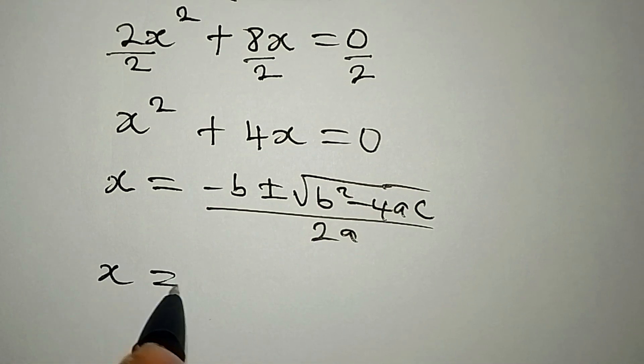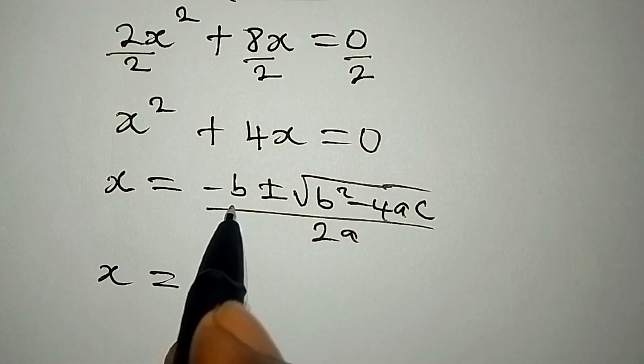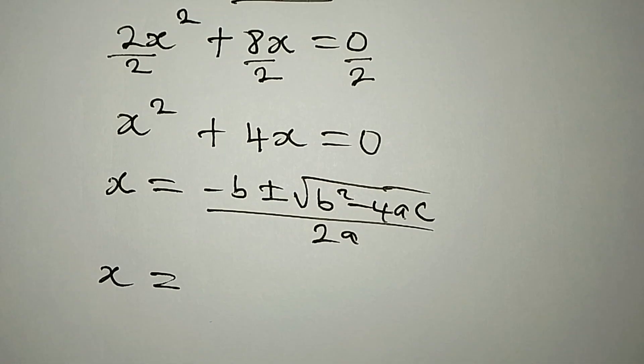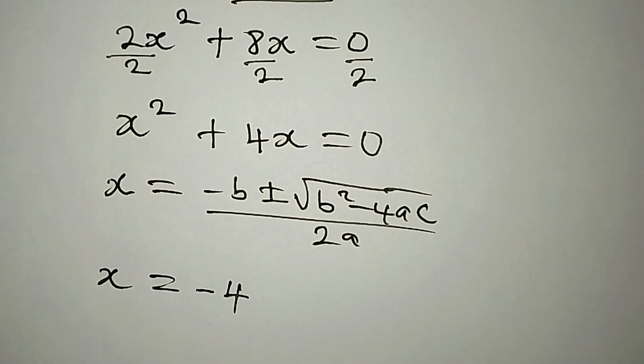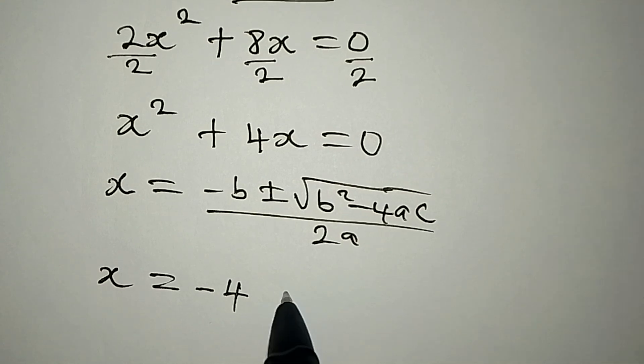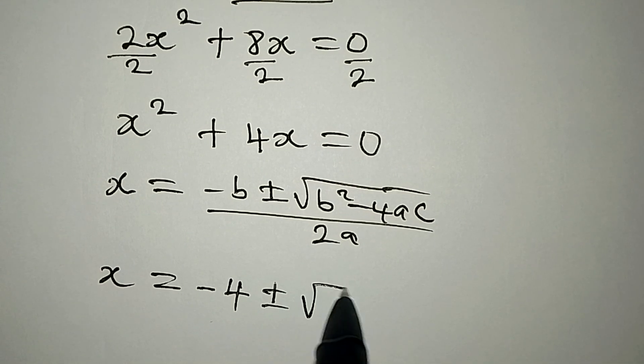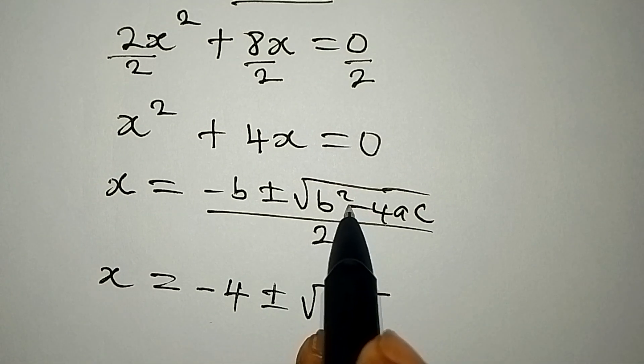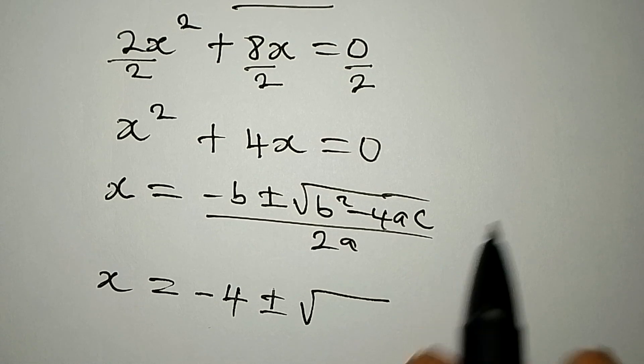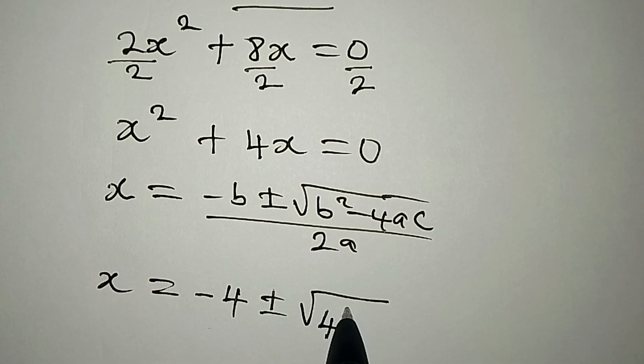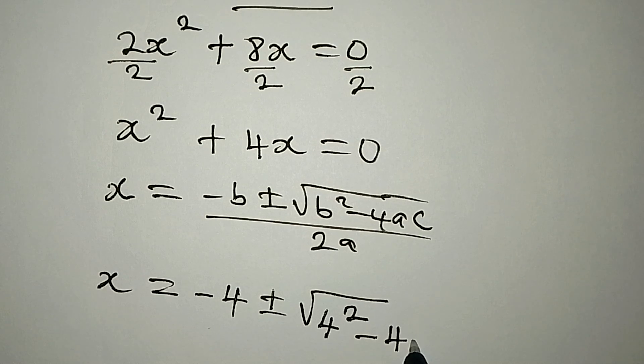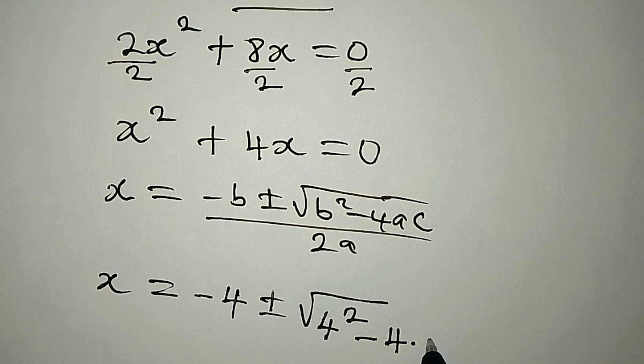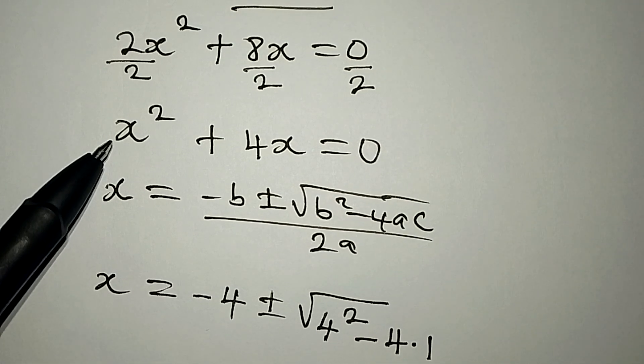Now what do I do? x from here is equal to minus b. Right, what is b? Our b is 4, so we're having minus 4 over there. And then we have plus or minus, we have square root of b². What is b squared? b² will now become 4².